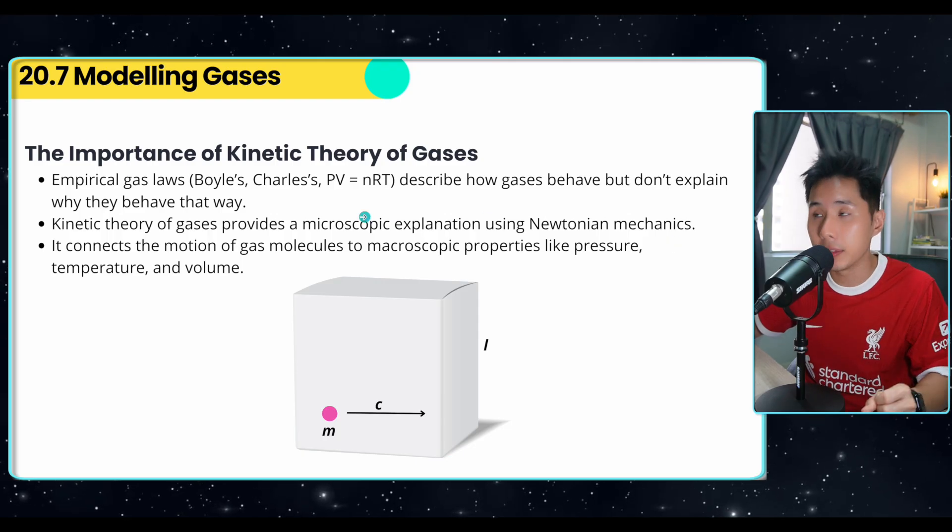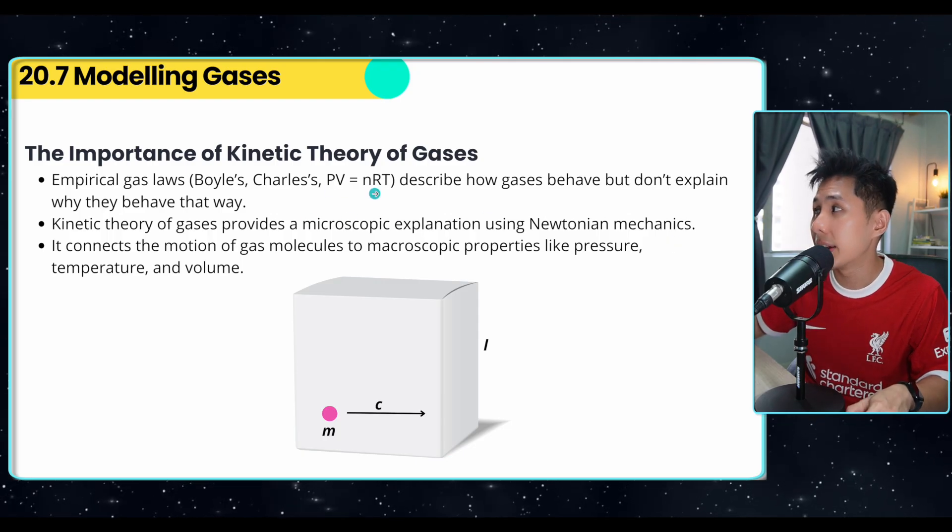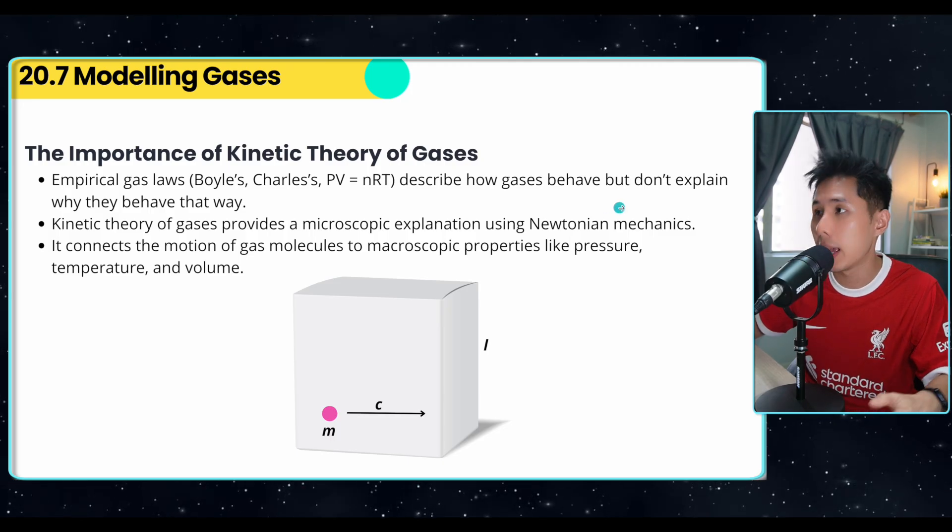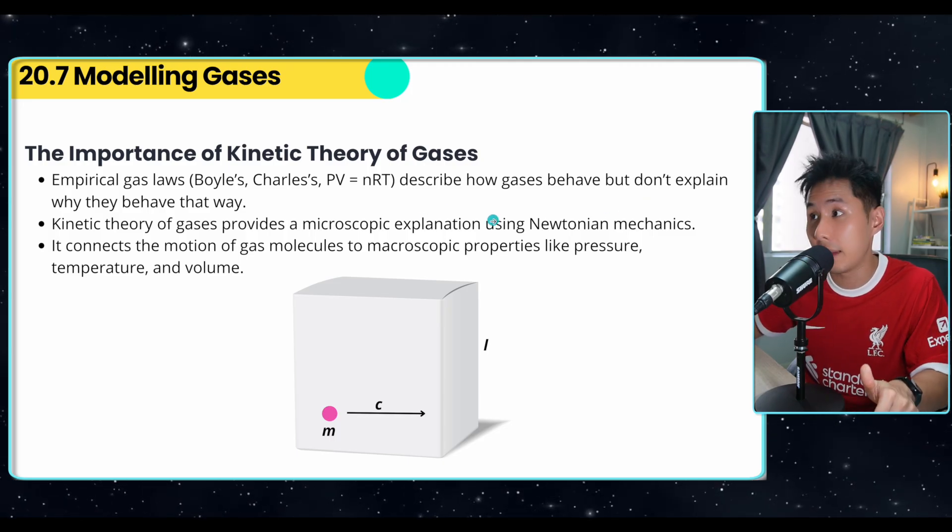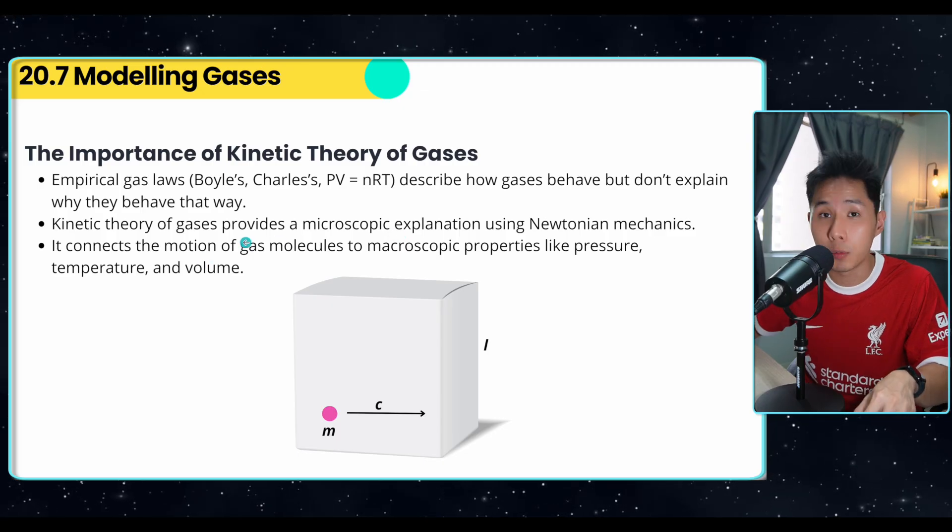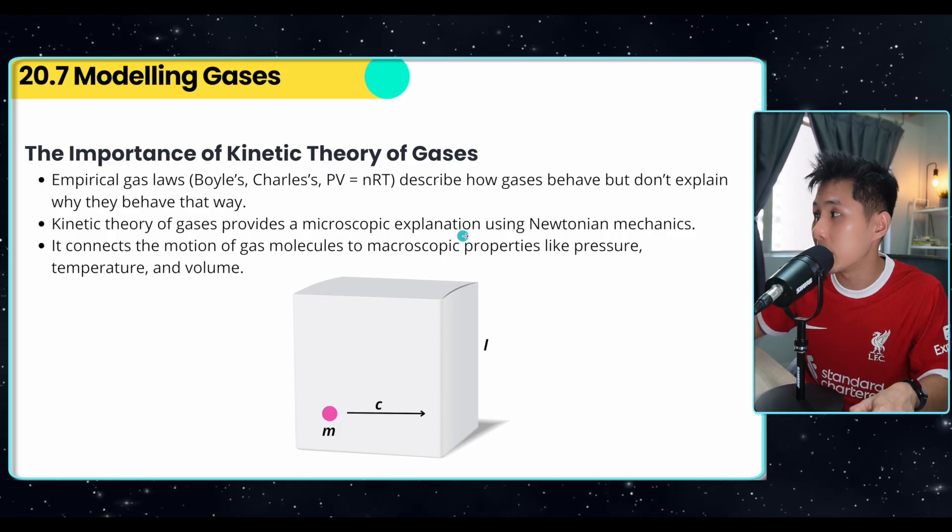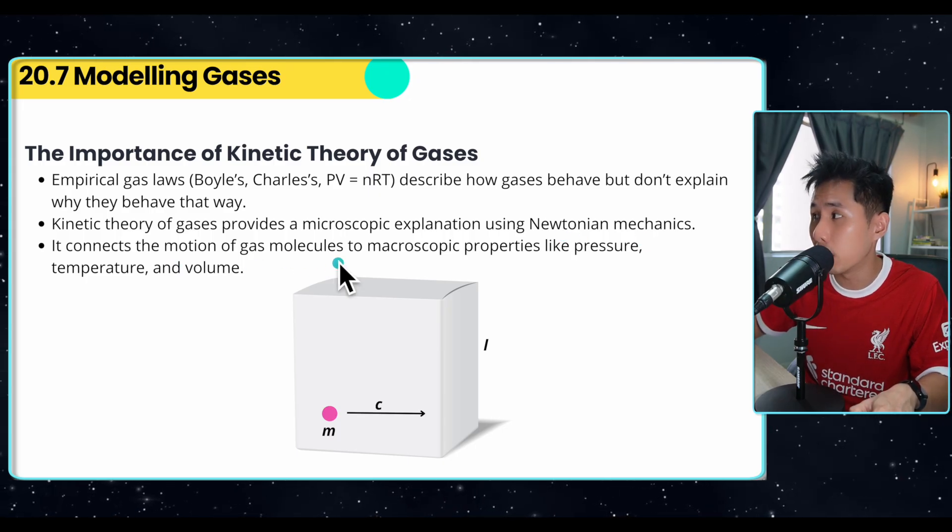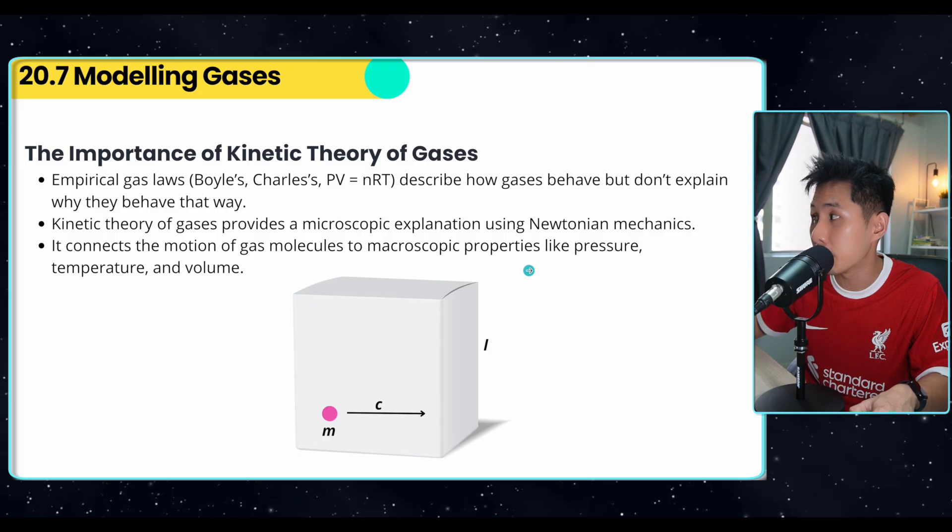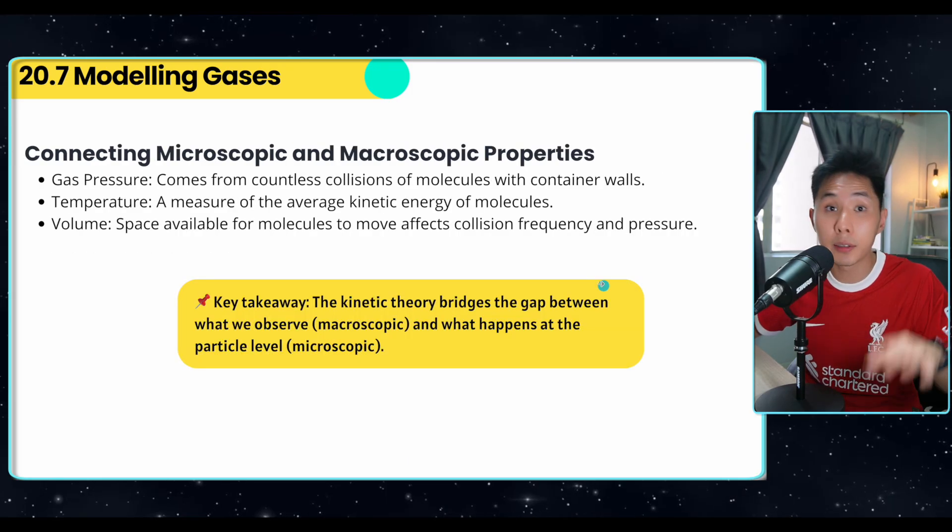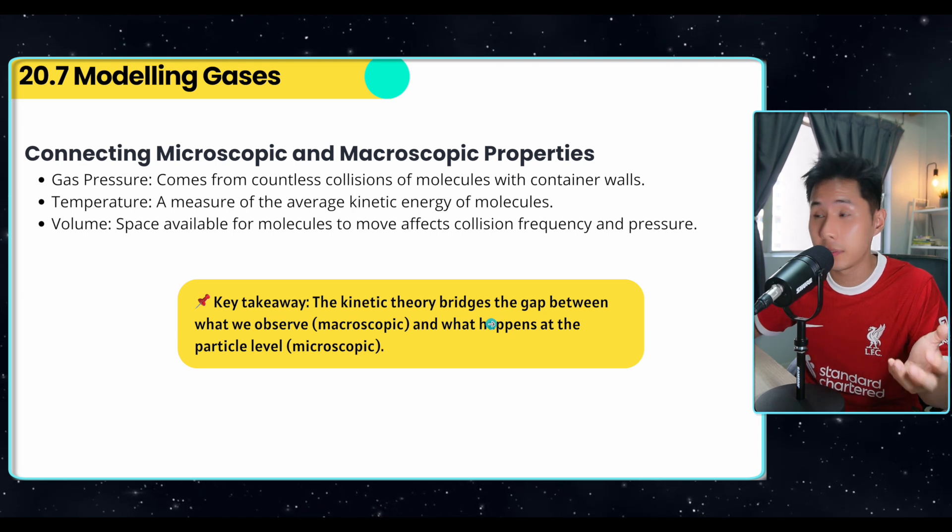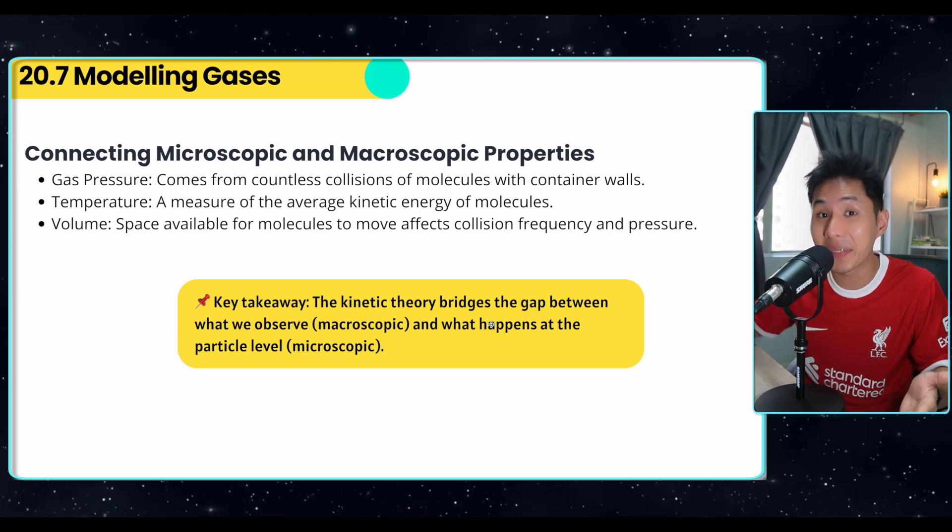So all the laws that we have learned and the equations that we have learned so far, they describe how gases behave, the different quantities, how they change, but they don't explain why they behave that way. So kinetic theory of gases provide a microscopic explanation using Newtonian mechanics. So it connects the motion of gas molecule to macroscopic properties like pressure, temperature, and volume. So to summarize, the kinetic theory bridges the gap between what we observe and what is happening at the particle level.